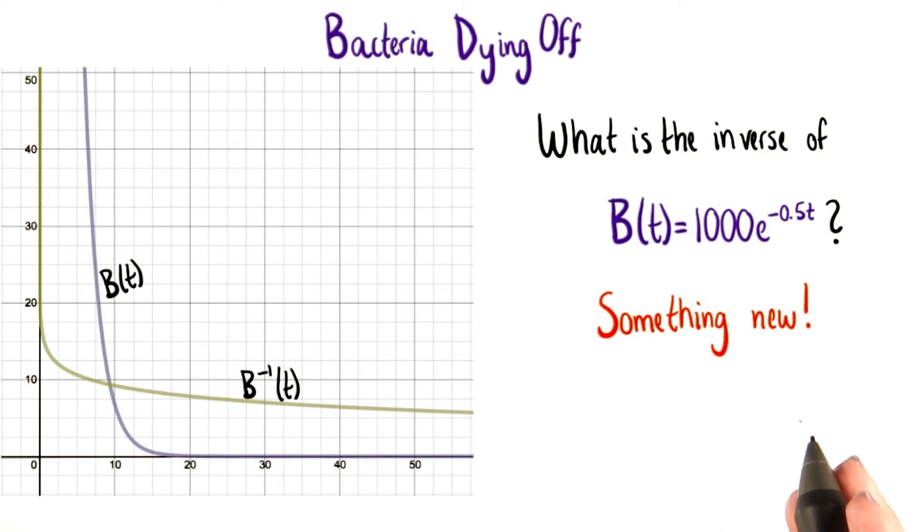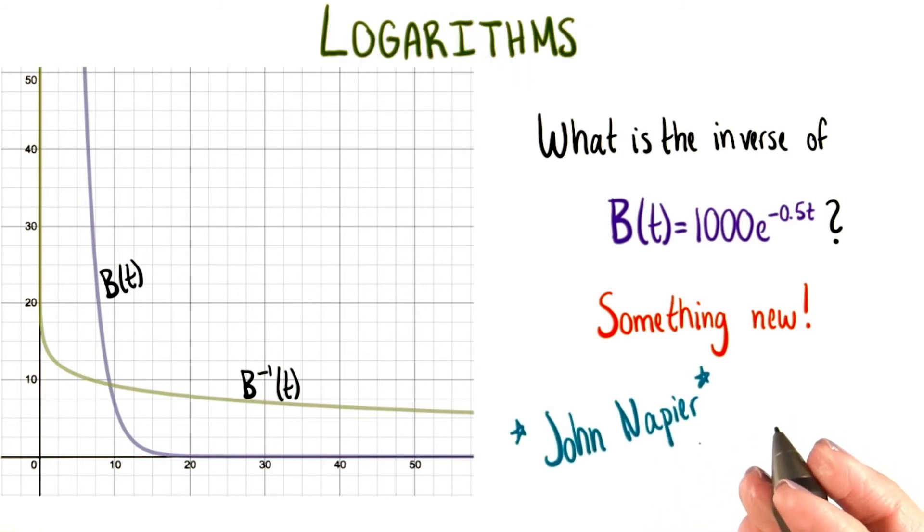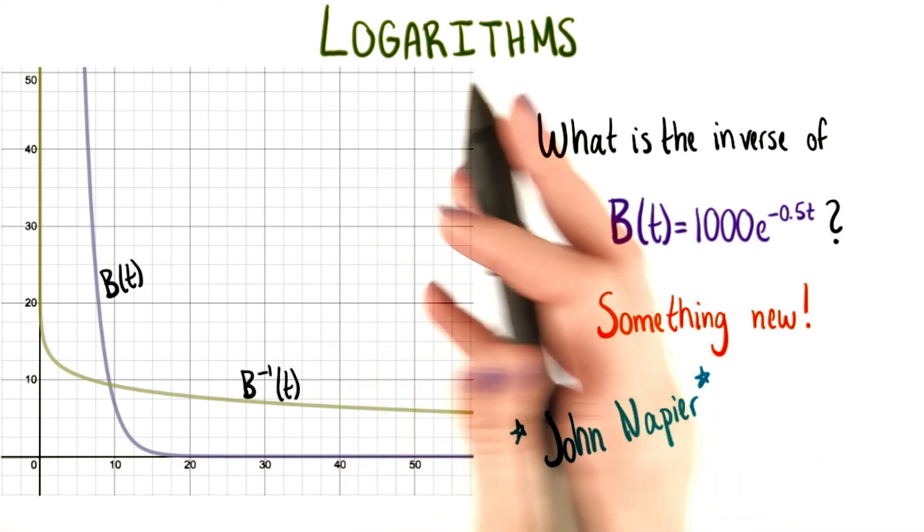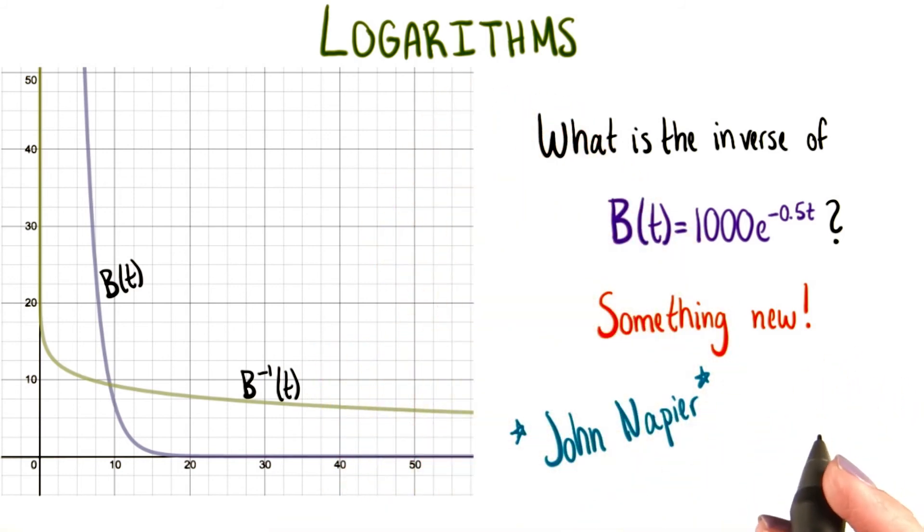That idea is something that a Scottish mathematician named John Napier discovered in 1614. His discovery was called a logarithm, or just a log. We'll look at some simpler examples first, and then come back to this bacteria example once we have all the tools we need.